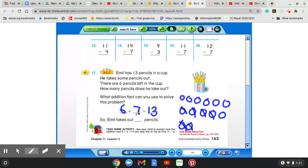Very good, and I hope you said seven because we took out seven. Emil took out seven pencils. And so we know that six plus seven or seven plus six equals 13, and that's how that we found out how many pencils we took out.